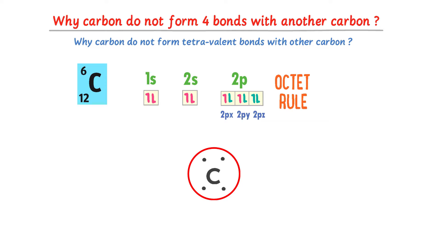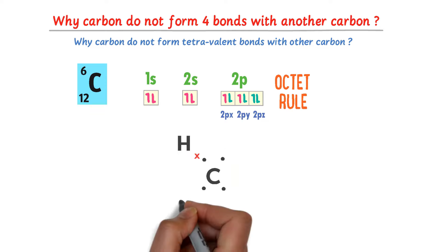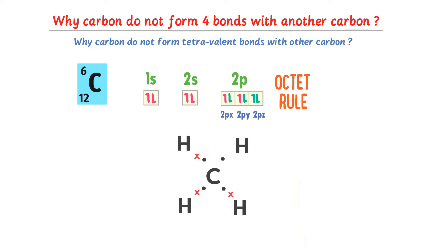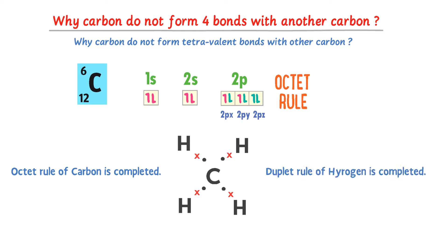Each carbon atom will share its four electrons with four hydrogen atoms. Both carbon and hydrogen achieve stability because the octet rule of carbon is completed and the duplet rule of each hydrogen atom is completed. Hence, carbon forms four covalent bonds — it is tetravalent.